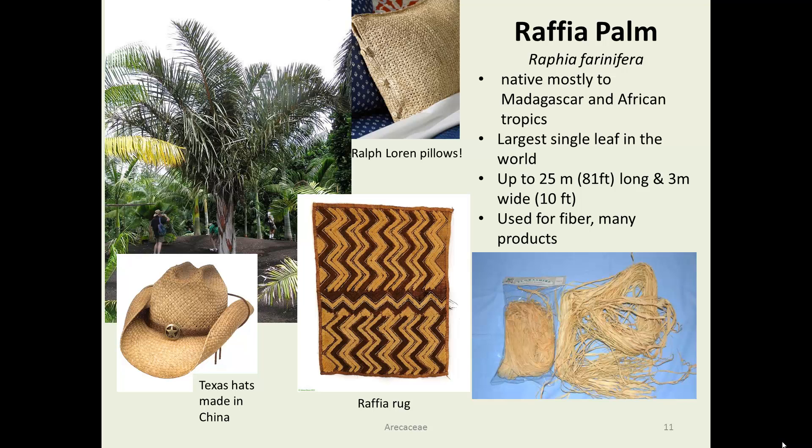The raffia palm is another economically interesting plant. It has the largest single leaf in the world — the picture shows a man standing at the base of the plant for scale. These pinnate leaves have been measured as long as 81 feet and 10 feet wide. People have learned to peel the bottom layer of those fronds off to create raffia fiber, which is made into an almost unlimited range of products: hats, coats, purses, rugs, chairs, and tables. Ralph Lauren has a line of raffia. Note that this is not a Panama hat — that is made from a different plant entirely.